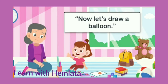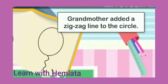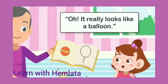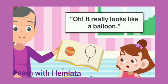Now let's draw a balloon. Ab uski dadi maa aur Mohini dono bahut khush hoti hain — they are very happy. Grandmother added a zigzag line to the circle. Pehle circle banayenge, aur uske niche ek snake ki tarah zigzag line banayenge — that is called a zigzag line, not a straight line. It really looks like a balloon. Mohini itni shocked reh jaati hai aur kehti hai, dadi maa yeh toh sach mein balloon dikhai de raha hai!